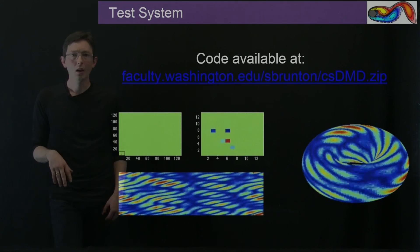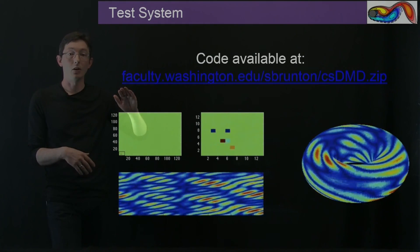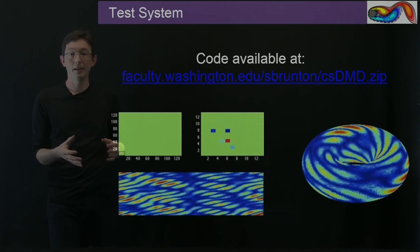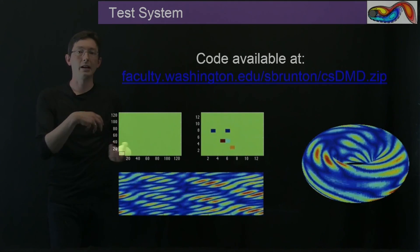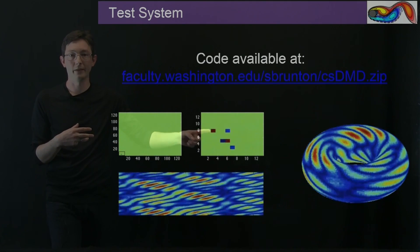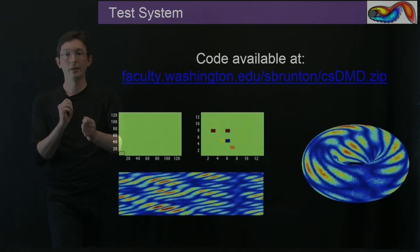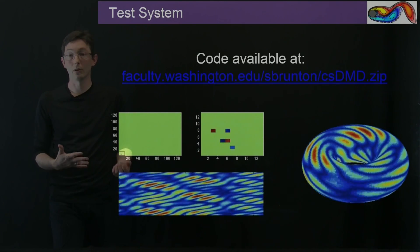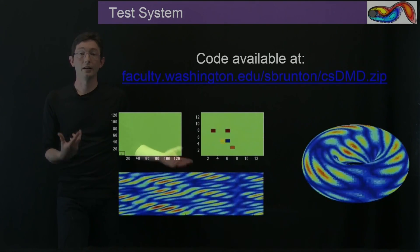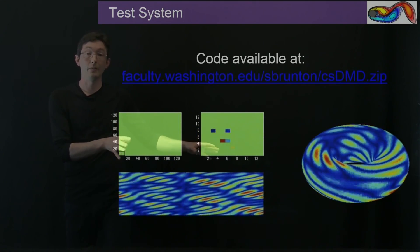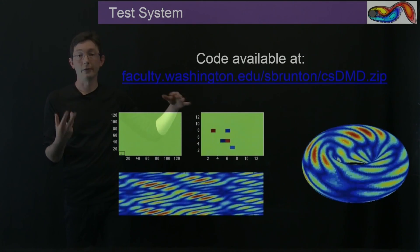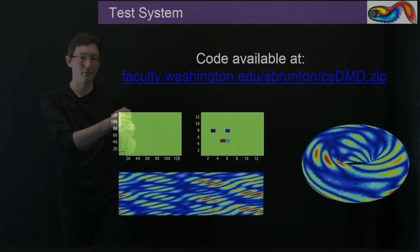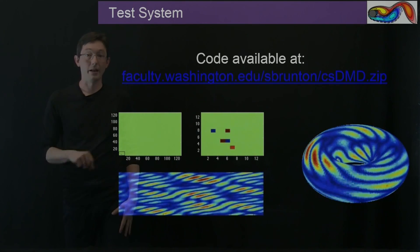All of our code is available online — download csdmd.zip. We include a nice example of a sparse dynamical system evolving on a torus, with five spatial Fourier coefficients driven by a sparse dynamical system, giving rise to spatially-temporally coherent modes. You can download the MATLAB codes, generate this data, and try different compressed or compressed sensing DMD approaches, different compression ratios, and different kinds of pixel sampling.